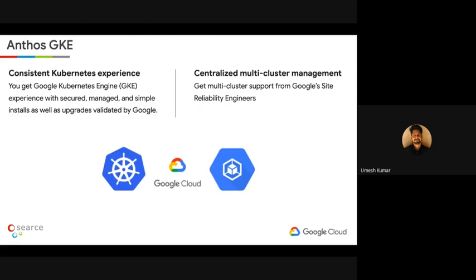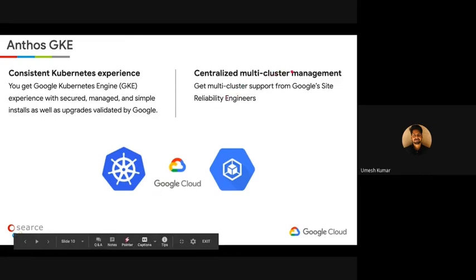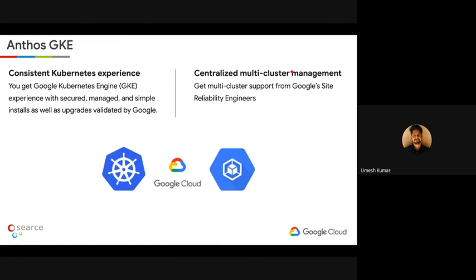Now if you look at Anthos GKE, the core features of GKE remain as they are. The only difference is that it is a centralized multi-cluster management. The features of GKE are essentially applied to all the Kubernetes clusters you manage with Anthos — it could be on-premise, on AWS, or on Google Cloud Platform. You get central multi-cluster management, and the team that supports GKE is the same SRE team that manages Google.com's infrastructure. You can be certain that you are in safe hands. You also get consistent Kubernetes experience — you might be running different versions of Kubernetes on-premise versus public cloud, and managing deployment files becomes difficult. Anthos gives you a consistent Kubernetes experience in a very secure and managed way.